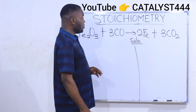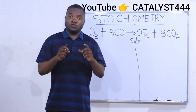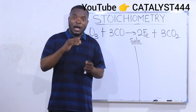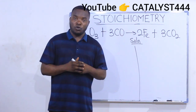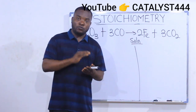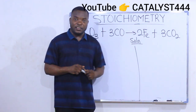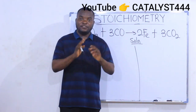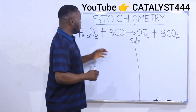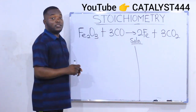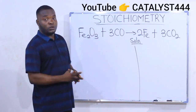Remember in previous videos, I showed you how to solve calculation problems on stoichiometry. There are four steps to follow and your answer comes out. Step one says: balance the equation given to you. And looking at the equation, you can see that the equation is already balanced.